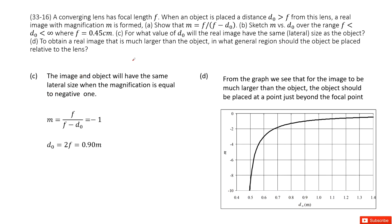And the third one is for what value of d₀ will the real image have the same size as the object? Now question, the image has the same size as the object, and this is a real image. That means the m should be negative 1, right? Negative 1.